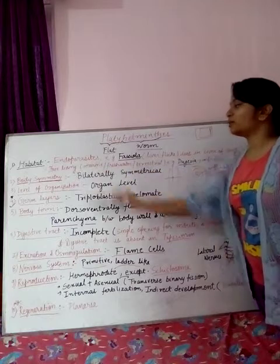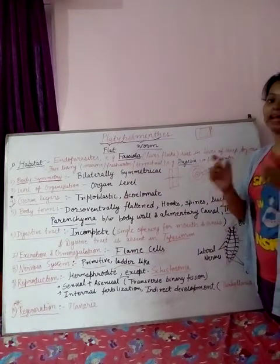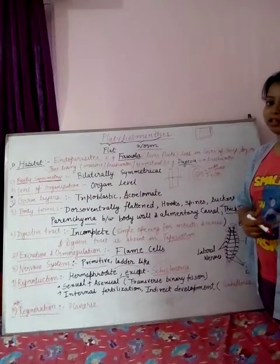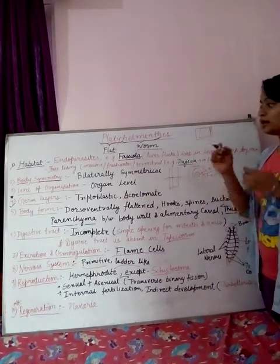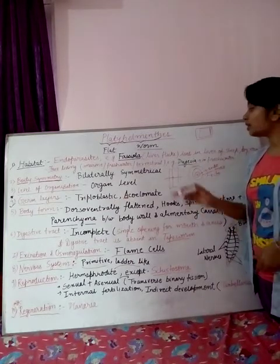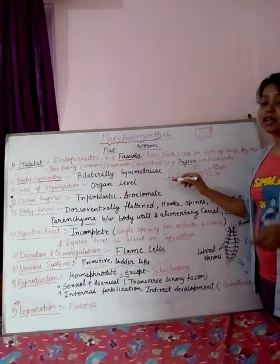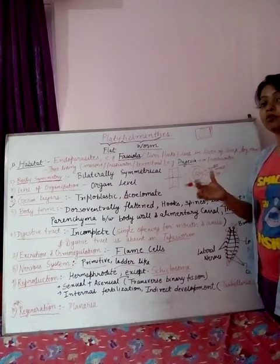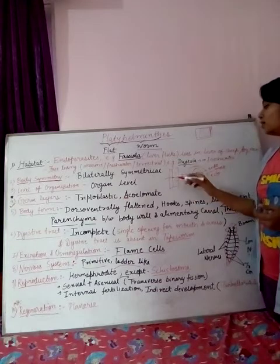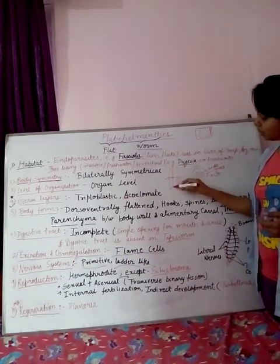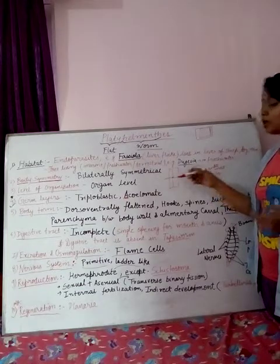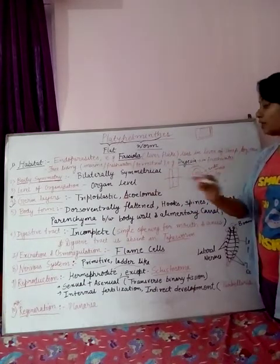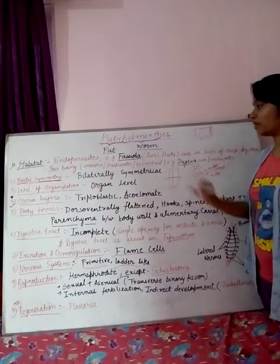Next is body symmetry. Body symmetry is bilateral type. Bilateral symmetry means that if you pass one line from the center axis of the body, you get two equal halves. You can pass the line transversely as well and still get two equal halves, but the condition is that you must pass the line from the center axis.